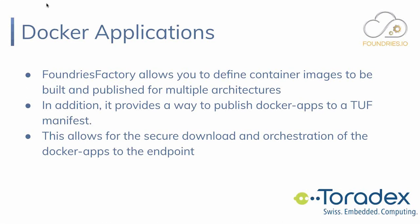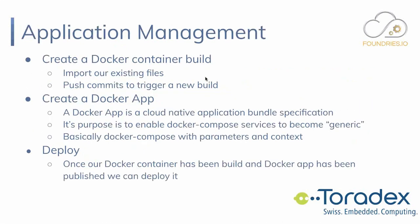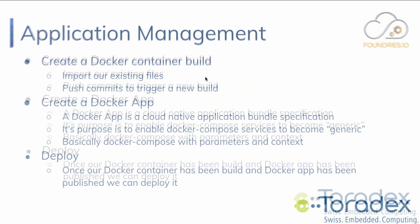Docker apps provide a turnkey way to publish to a TUF (The Update Framework) manifest that securely delivers Docker applications to the platform. Both the manifest and the images themselves are signed and verified by the target. Unlike Docker Hub's 'latest' tag (which can change), we use the SHA of the source build to tag images, embedded directly in the manifest — so aktualizr-lite knows exactly which container to pull and which one to roll back to if there's a problem.